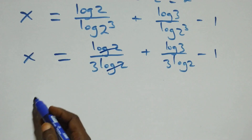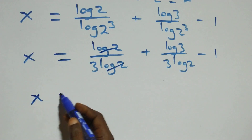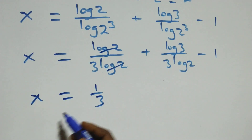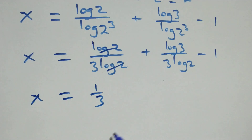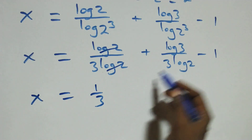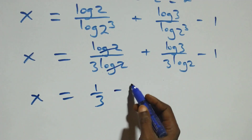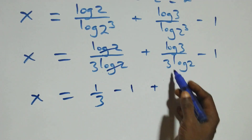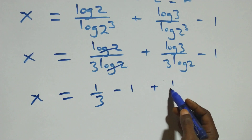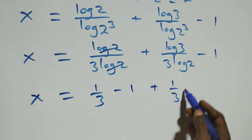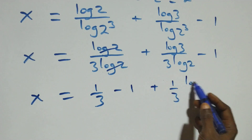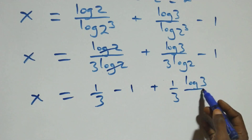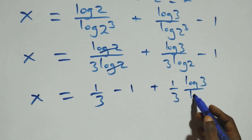We have 1 over 3 left. So x equals 1 over 3 minus 1, plus 1 over 3 times log 3 over log 2.